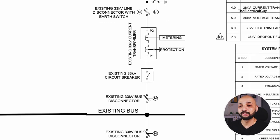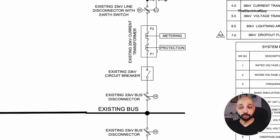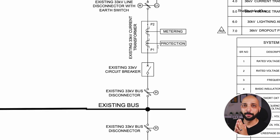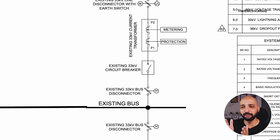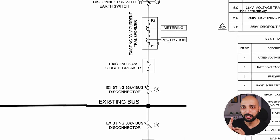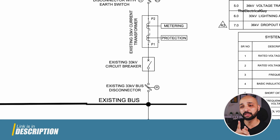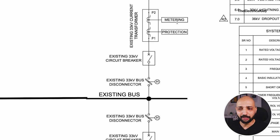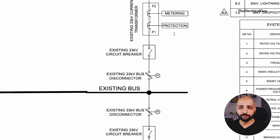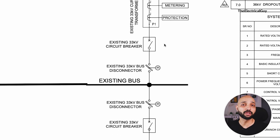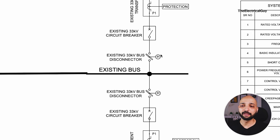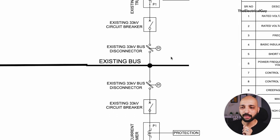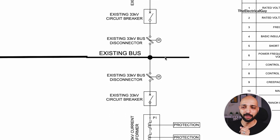After the disconnector, there is a current transformer. This is a two-core current transformer — one core is used for metering purpose and the other core is used for protection purpose. After the current transformer, we have a 36 kV circuit breaker. After that, there is a 36 kV motorized disconnector without any earthing switch, and then the connection is given to the bus bar — a single bus bar.